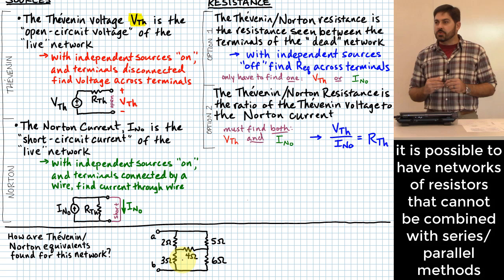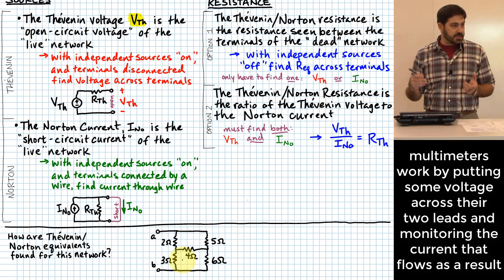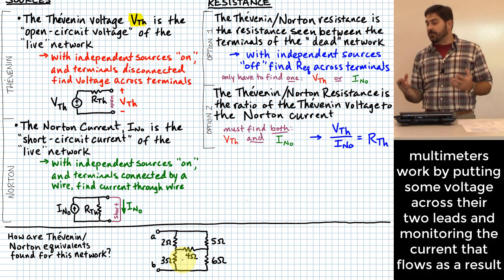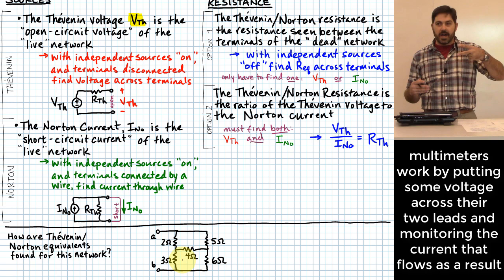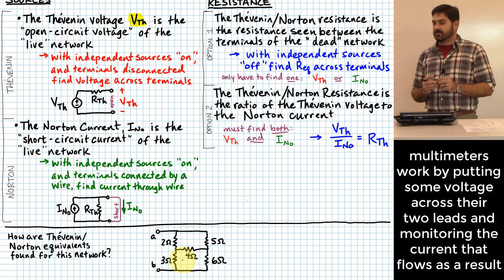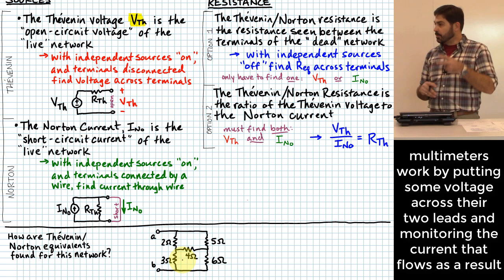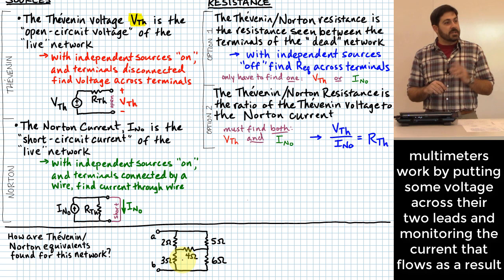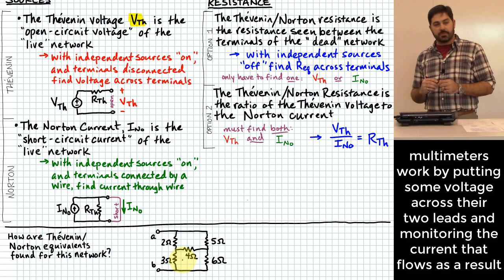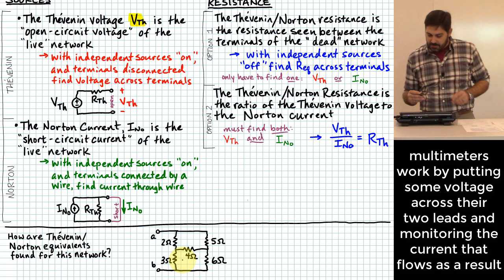So what would you do if you needed to know the equivalent resistance of this network? Does it even have meaning? If you put a multimeter across the two terminals of this resistance network, would you read some resistance value? The answer is yes — you would actually read some resistance across terminals A and B. Let me tell you a little bit about how a multimeter does that evaluation of equivalent resistance.